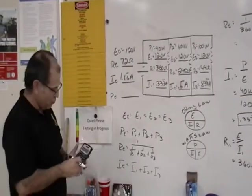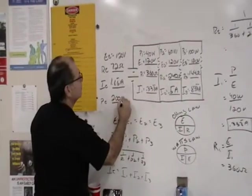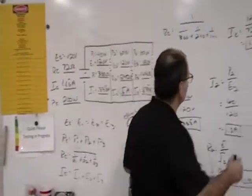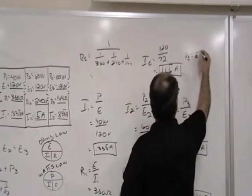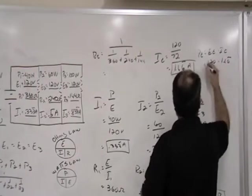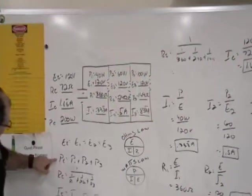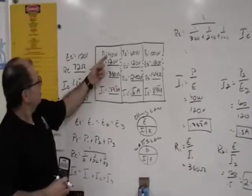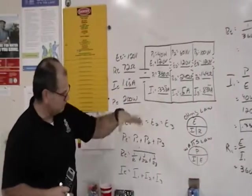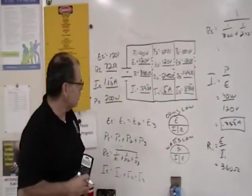And we can do the same thing for PT. Take total current times our total voltage to get a total of 200 watts. To verify, all we did to solve for total power was take ET times IT, 120 times 1.66 repeating, and that gave us our 200 watts. But check this out, we also know that PT is equal to P1 plus P2 plus P3. 40 plus 60 is 100 plus another 100 gives us our 200 watts. So we know that all of our work here is correct if we double-check our answers using the rules in comparison to the laws and Ohm's Law.